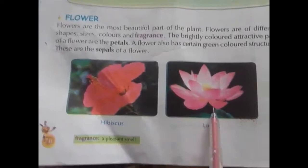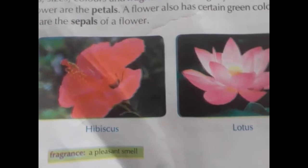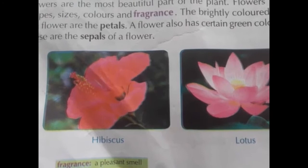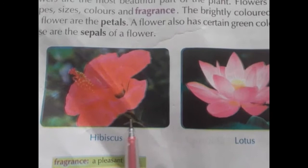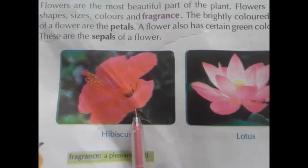What is a flower? Flower is the most beautiful part of the plant. Some flowers are in red color, rose flower is in pink color, white color, and different colors. Jasmine is also one of the flowers — it is in white color only, and it gives so much smell. That smell is called fragrance.